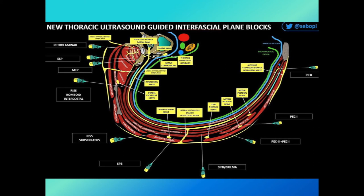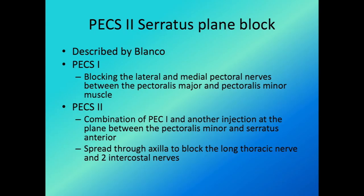To anesthetize the anterior lateral chest wall, you can target the intercostal nerve at its anterior to lateral nerve endings. To anesthetize the whole chest wall — from anterior to lateral to posterior — you need to go nearer to the spinal cord, which is where the erector spinae plane block comes in. Beyond ESP, people have also described the retrolaminar and rhomboid intercostal blocks. Today we will focus on the PECS and serratus plane block, which are quite established.